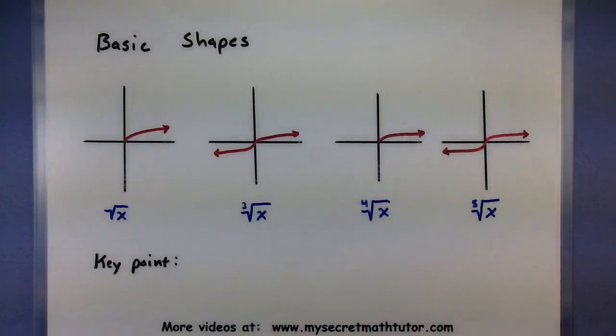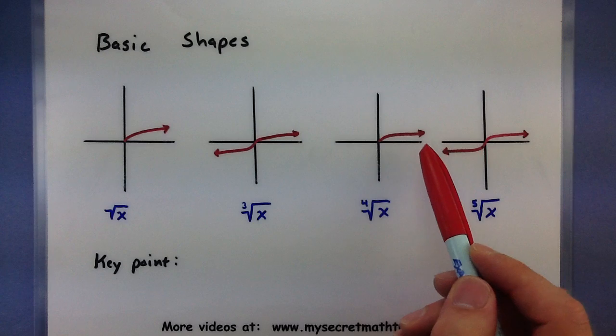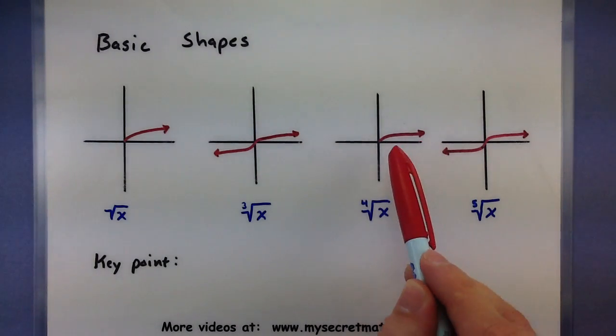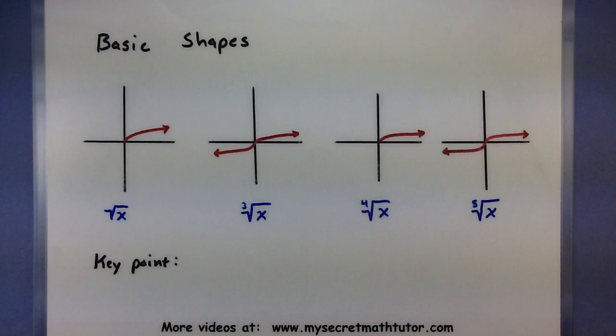You know take something like the fourth root of x. It is again like an upper half of an airplane wing. It will go through (0,0), it will go through (1,1), and then just really increase really slowly after that.